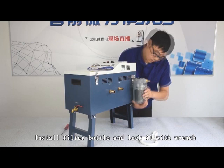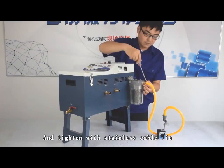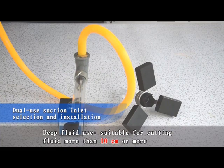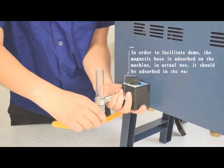Install mixture inlet pipe to filter bottle connector and tighten with stainless cable tie. Dual use suction inlet selection and installation for deep fluid use is suitable for cutting fluid more than 10cm or more. Insert dual use suction inlet to downcomer.